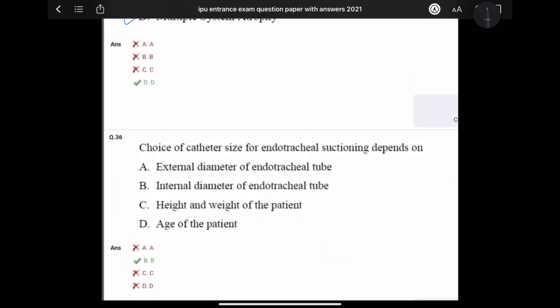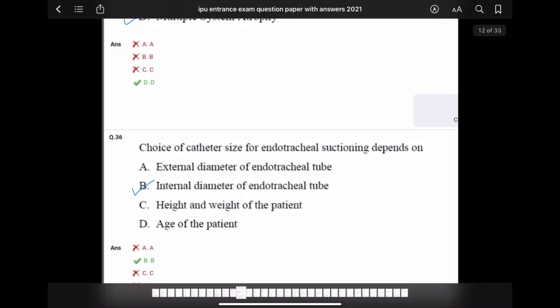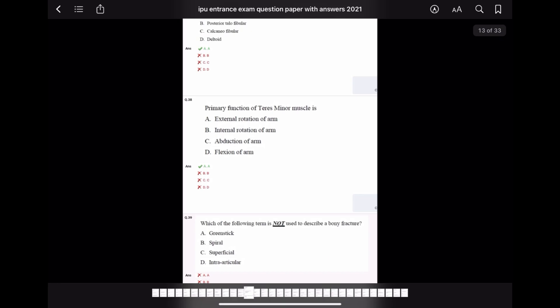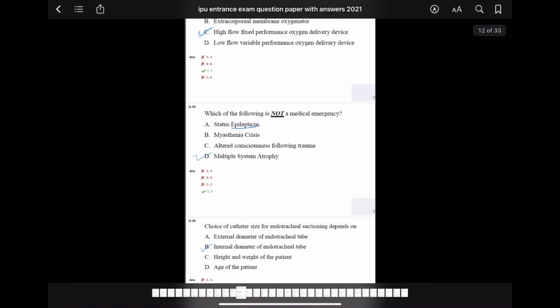Question number 36: Choice of catheter size for endotracheal suctioning depends on. Suctioning catheter depends on internal diameter of endotracheal tube. So B option is right, endotracheal tube internal diameter.